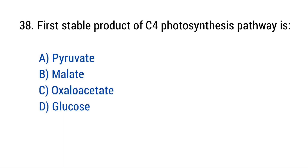Question number 38. The first stable product of the C4 photosynthesis pathway is? The right answer is option C: Oxaloacetate.